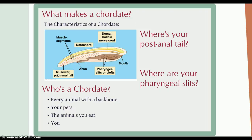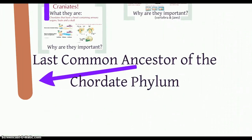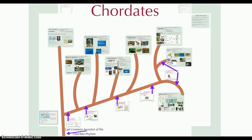So who exactly is a chordate? Any animal that has a backbone, certainly, and some other outliers in the chordate group, including us. We have this branch that adjoins us to the other eukaryotes, and now we have this chordate lineage with these individual groups.